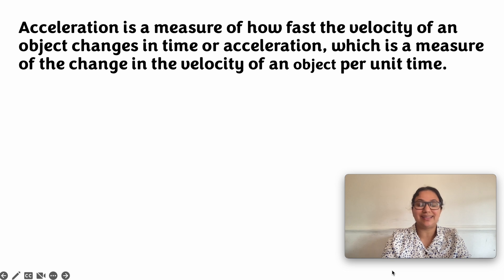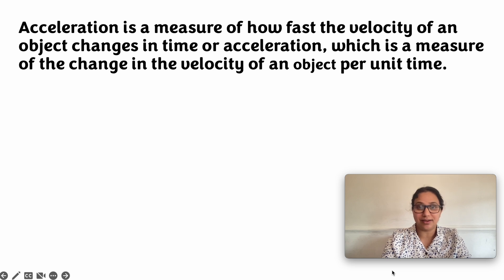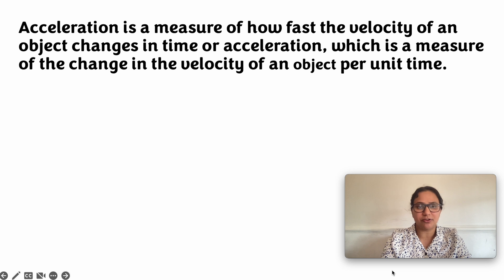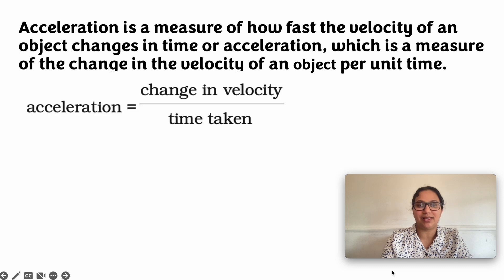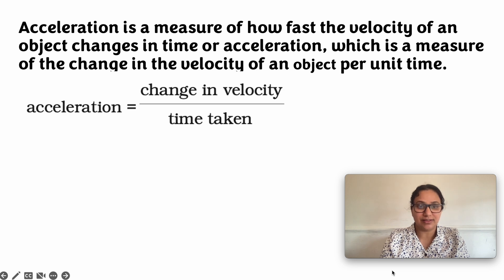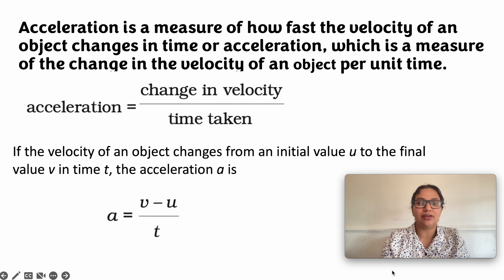How do we define acceleration? Acceleration is the rate of change of velocity. It is a measure of how fast the velocity of an object changes in time, or the change in velocity of an object per unit time. The formula is: acceleration equals change in velocity divided by time taken. If u is the initial velocity and v is the final velocity, then acceleration equals v minus u divided by t.